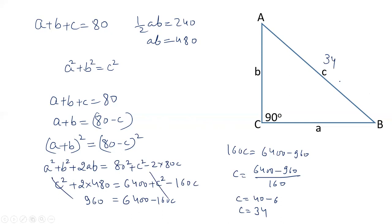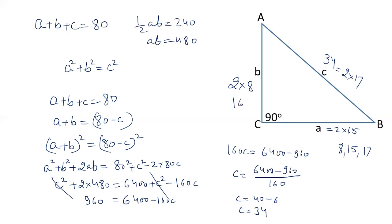We have got the value of c as 34. Now we can apply the Pythagorean triplet. Since 34 is twice 17, and the Pythagorean triplet is 8, 15, 17 where 17 is the hypotenuse, we multiply each by 2. So one side is 2 times 8 equals 16, and the other side is 2 times 15 equals 30. Therefore the three sides are 16, 30, and 34.